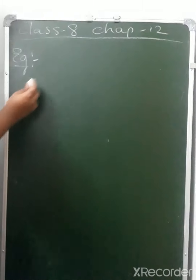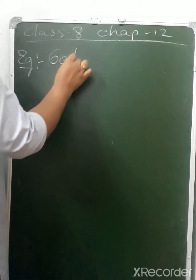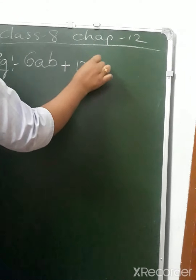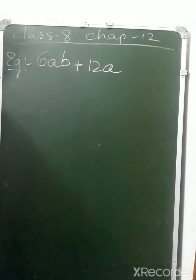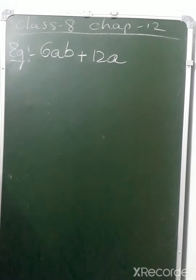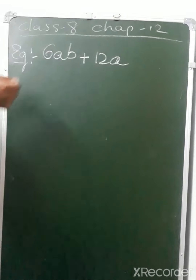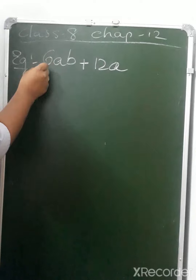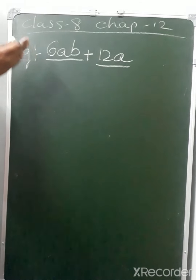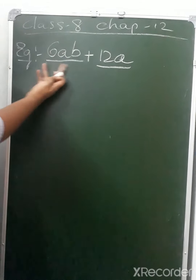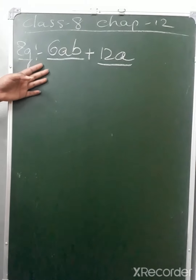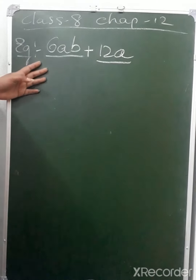We can take the example 6ab plus 12a. We have to find the common factors and also factorize this term. So how do we factorize and find common factors for this problem?